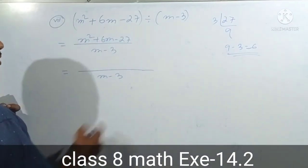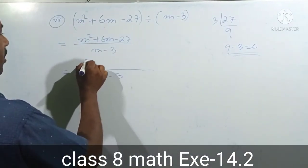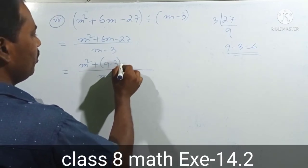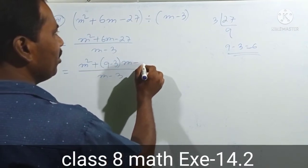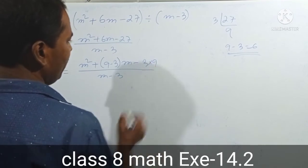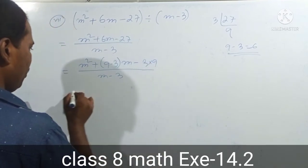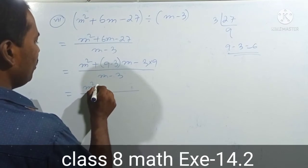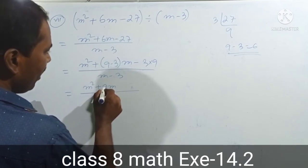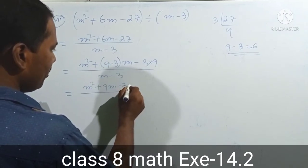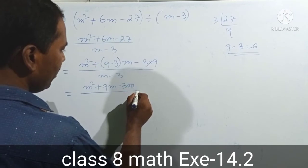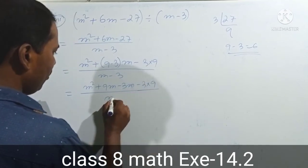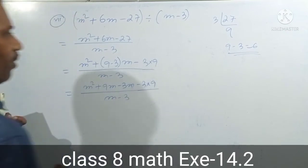The expression is m squared plus 9m minus 3m, minus 3 into 9. So we have m squared plus 9m minus 3m minus 3 into 9, which gives m squared plus 9m minus 3m minus 27.